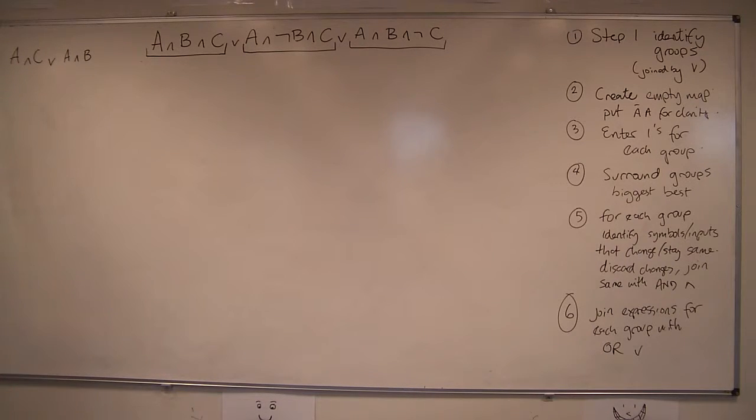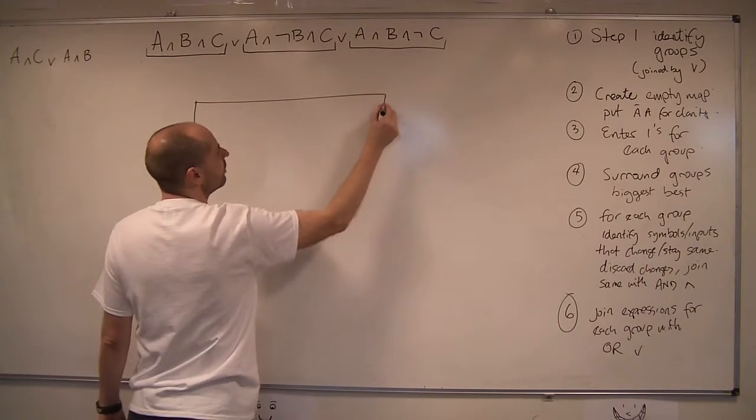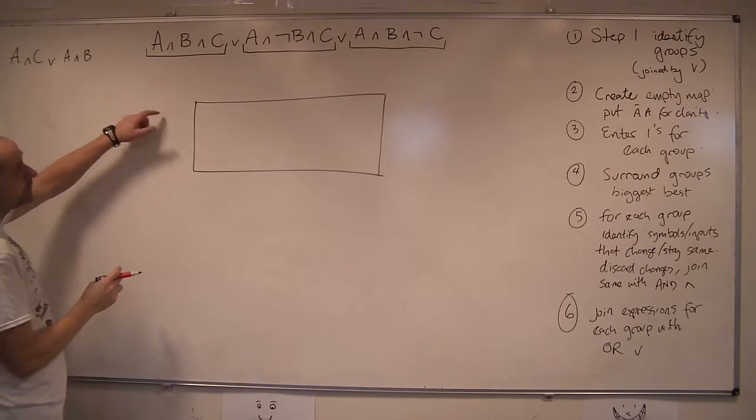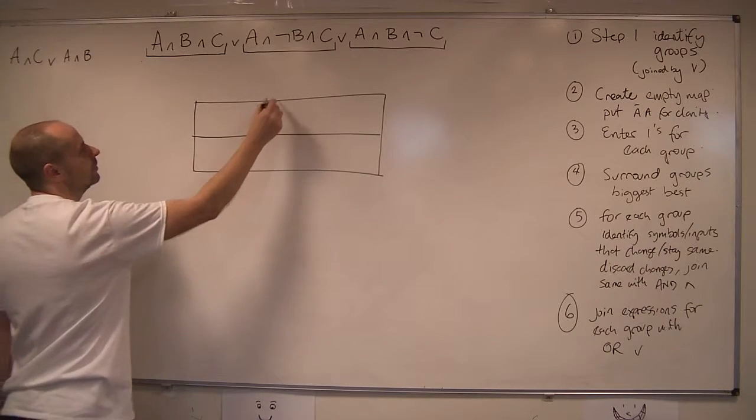The next step is, okay, now I've got to draw the box, the actual Karnaugh map. It's got three terms, so it's going to be a grid that's got four columns, and because we only need two rows for the other terms, C and not C, we just need to do two rows.